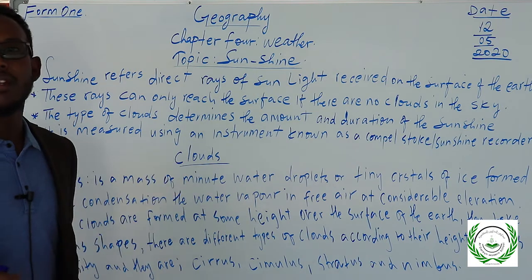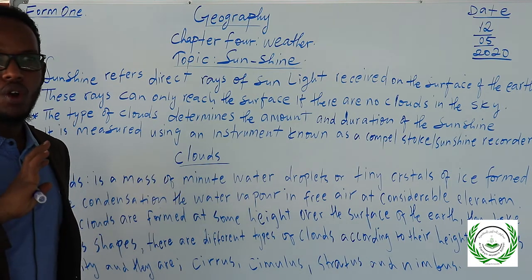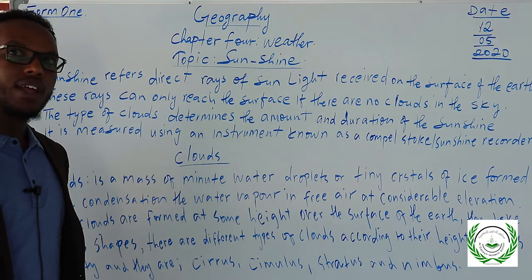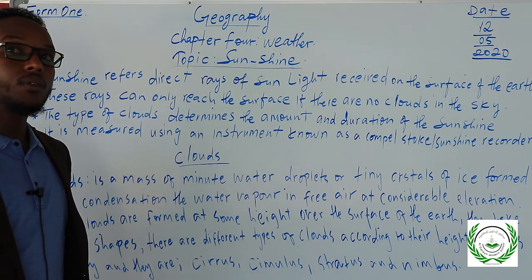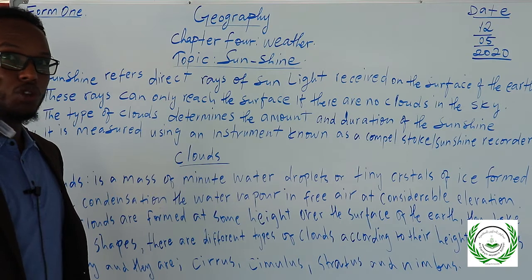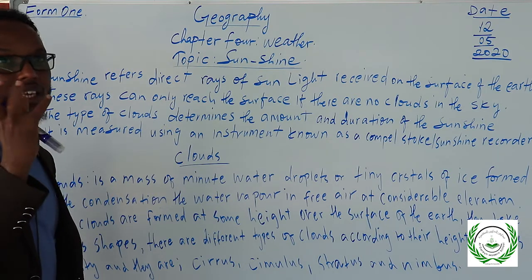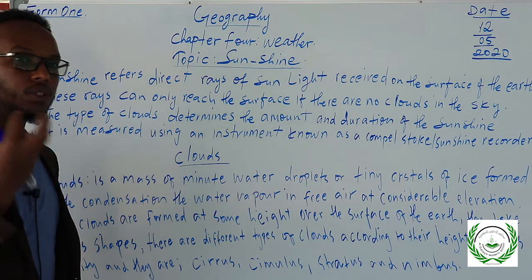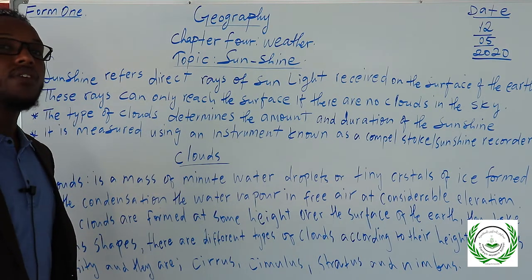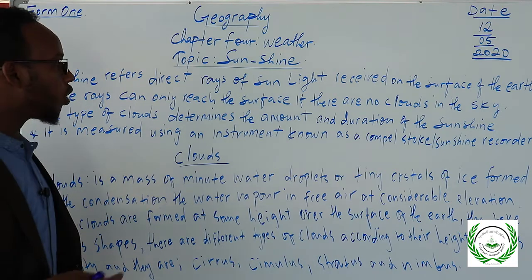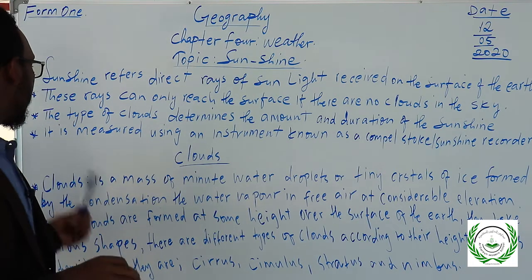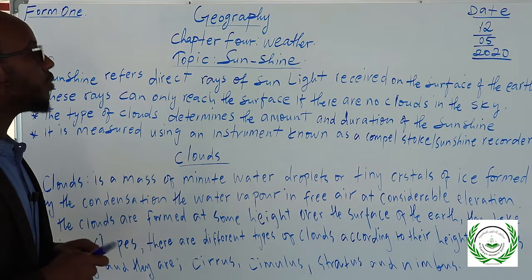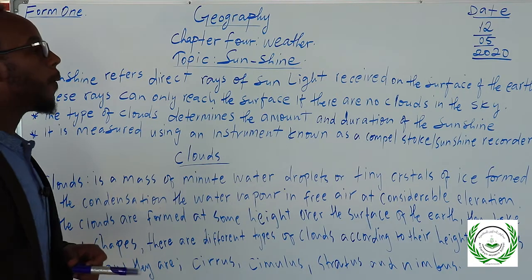If there is no clouds at all, sunshine is at its maximum. Sunshine is measured using an instrument known as a Campbell-Stokes recorder.